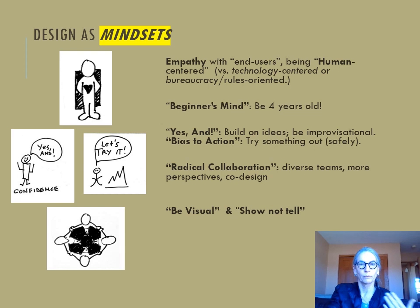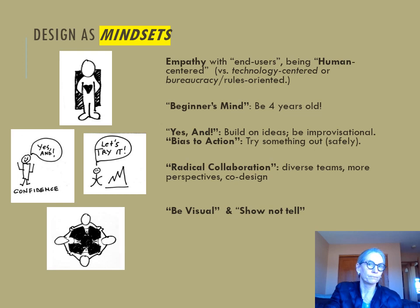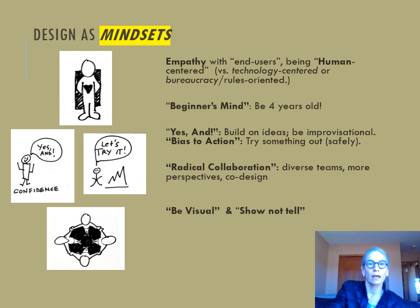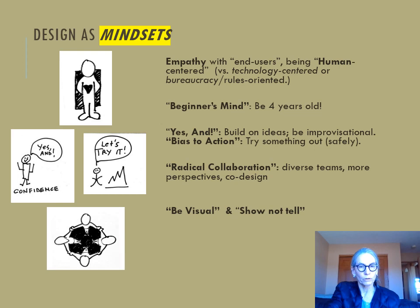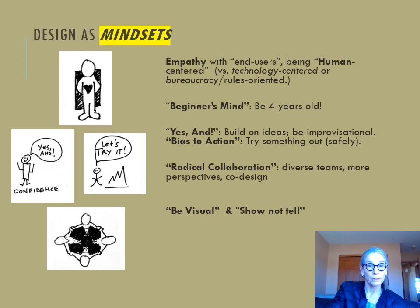Empathy means really thinking about what's going on with the people you want to design for — putting yourself in their shoes. Those might be pregnant women you aim to care for, or the healthcare professionals they're engaging with, or residents of a neighborhood. Beginner's mind says ask questions: why? why? why? And don't take things for granted. Improvise and build on others is the yes-and mindset — working together and building on ideas rather than being critical or shooting them down. Bias to action means getting up and acting: try it out, less talk, more prototyping so as to communicate, test, and learn. Working together with diverse people, we can generate more ideas, build on strengths, and co-design for complex problems. And be visual — using maps, sketches, 3D mock-ups, and other visuals to communicate beyond words.